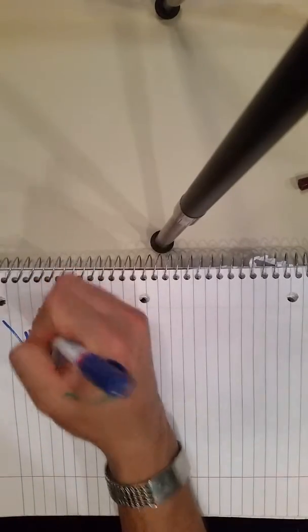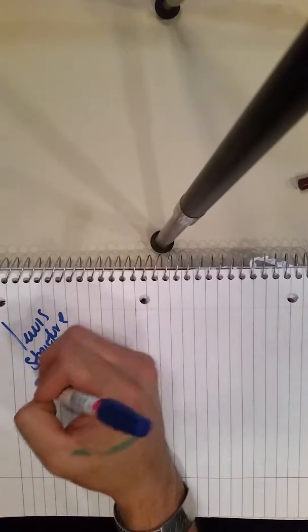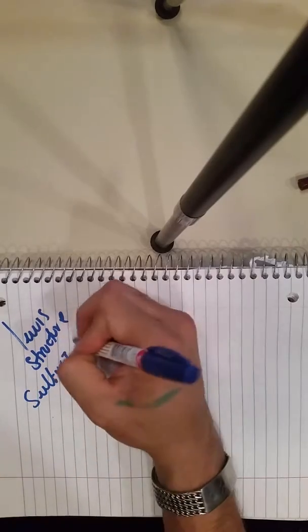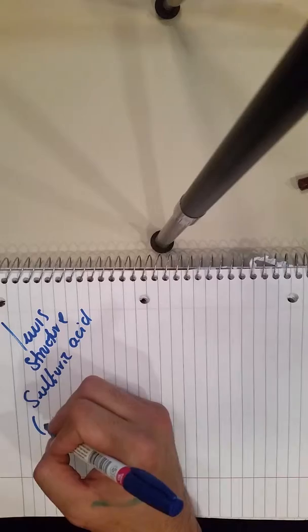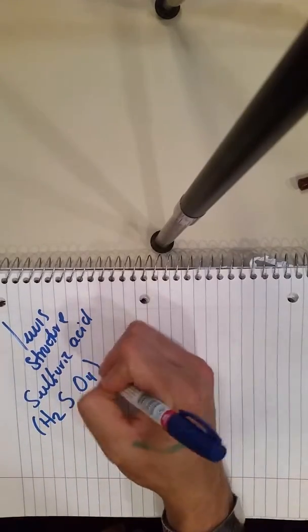Okay, so we're going to do the Lewis structure of sulfuric acid. That's two hydrogens, sulfur, and four oxygens.